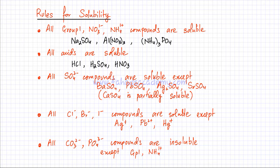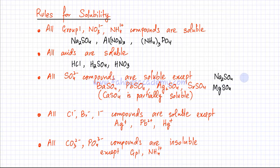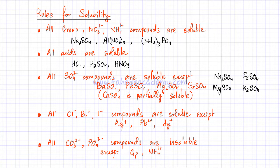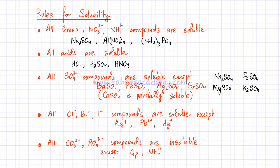Any sulfate compound other than those four — for example, sodium sulfate, magnesium sulfate, FeSO₄ (iron(II) sulfate), or potassium sulfate — would be soluble. You need to remember which four sulfate compounds are not soluble. Apart from those, all other sulfate compounds would be soluble and would dissociate in aqueous state, dissolving in water to form aqueous solutions.